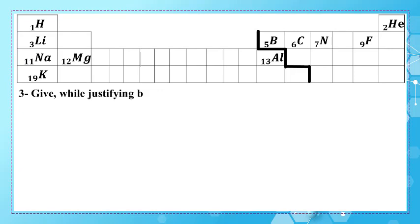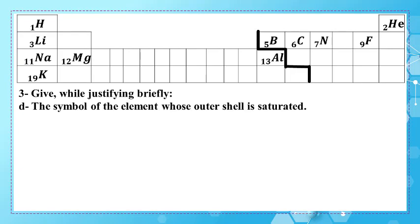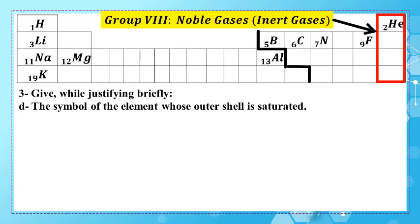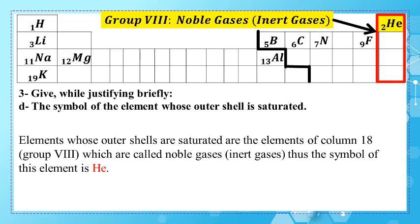Next, justify the symbol of the element whose outer shell is saturated. We know that elements whose outer shells are saturated are found in group 8, or column 18, of the periodic table, which are called the noble gases or inert gases. Thus the symbol of this element is He, or helium.